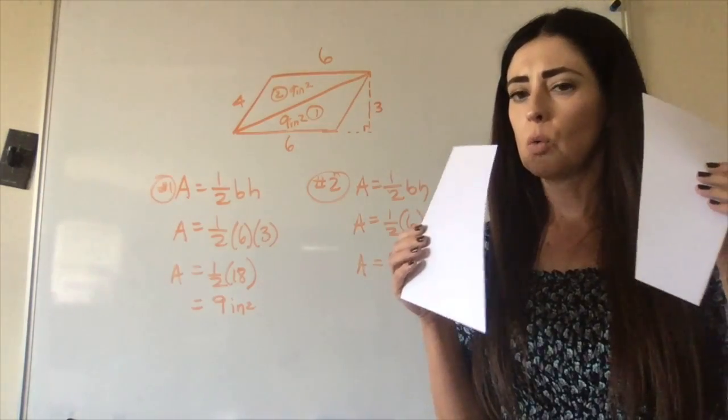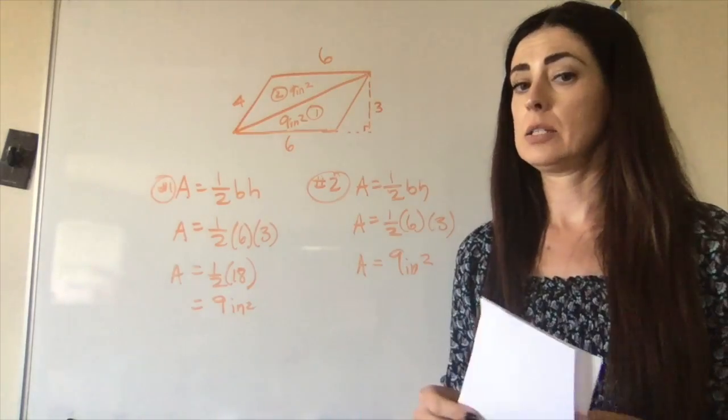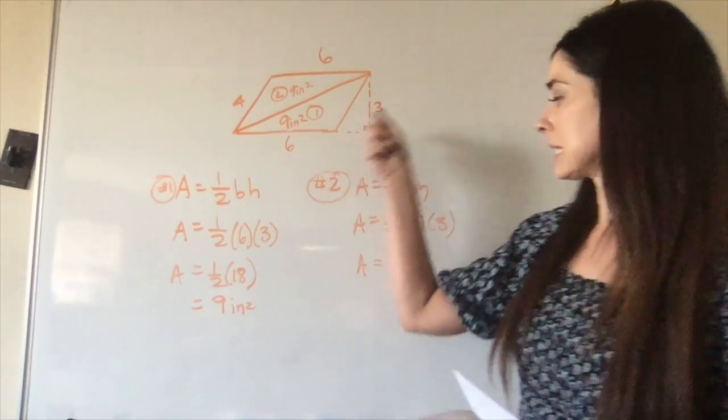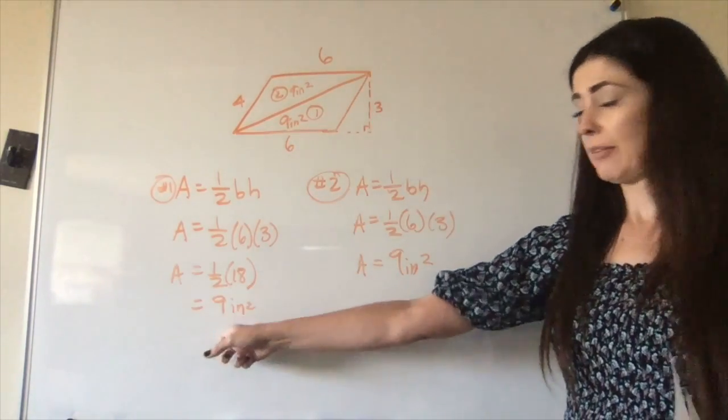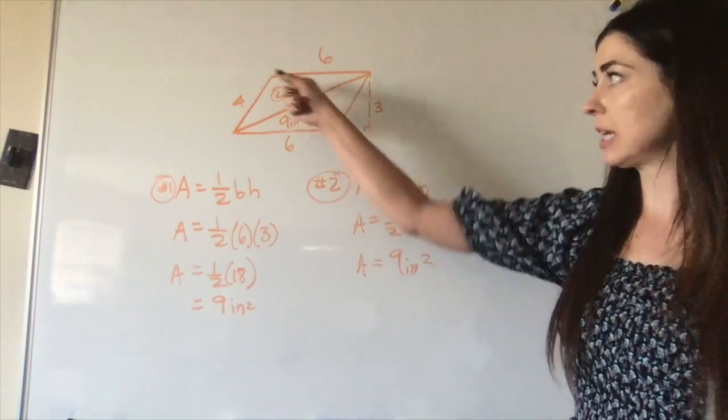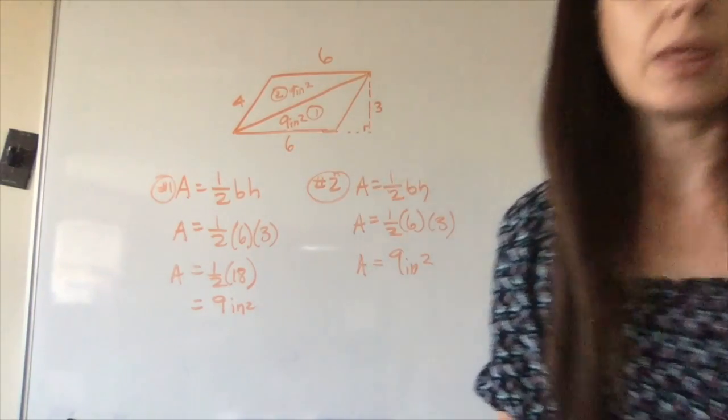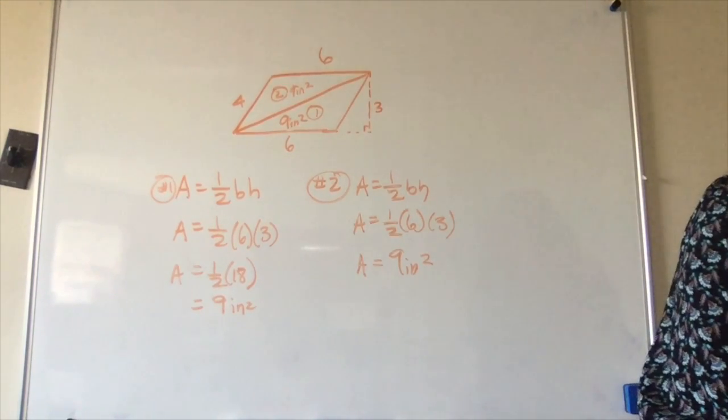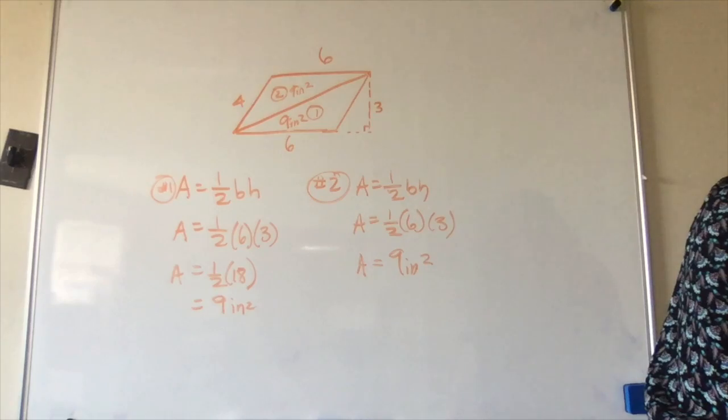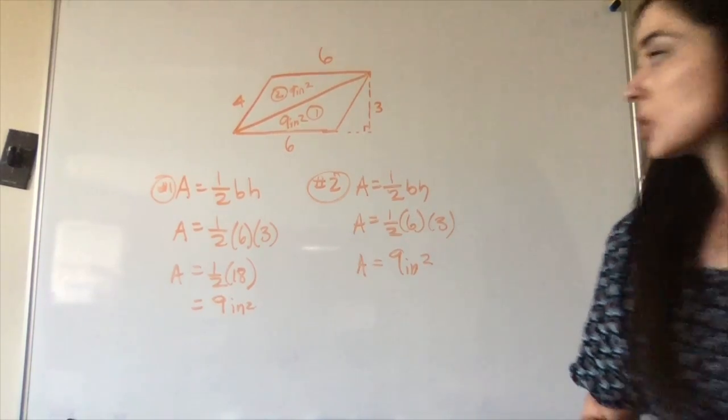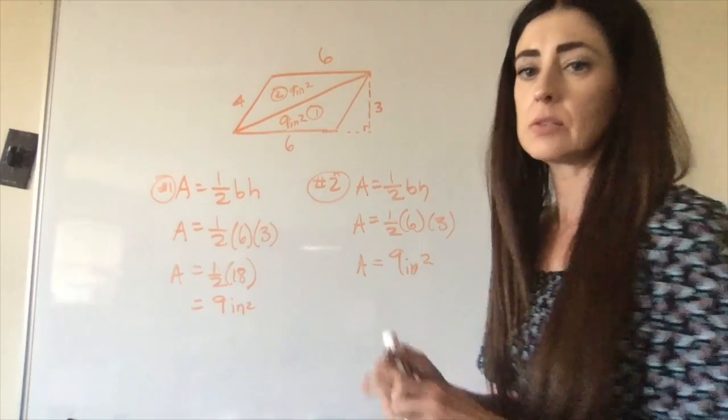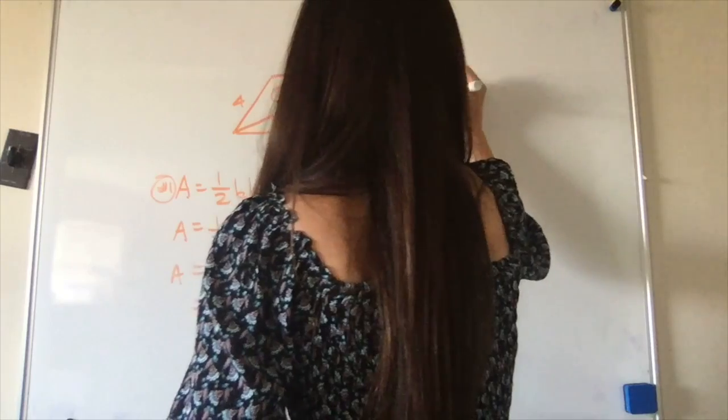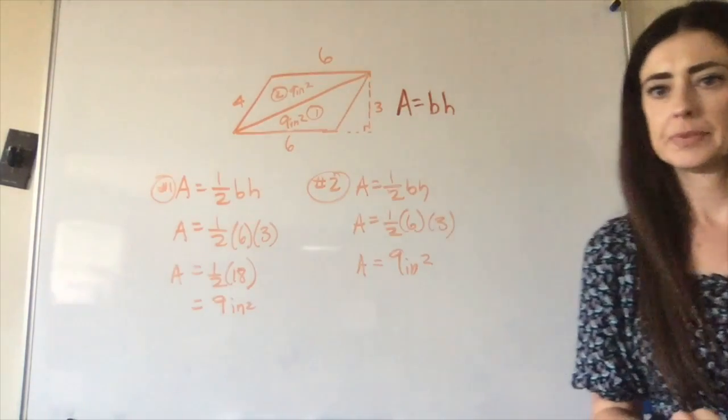So for regular polygons, you can just do base times height. Is 6 times 3 eighteen? We have a 9 for one triangle, 9 for the other, but 6 times 3 is 18. Remember, though, that's only for a regular polygon. All right, so the sum, the main point of this part of the lesson is that the area of a polygon is the same as base times height.